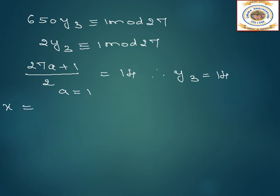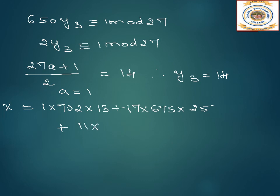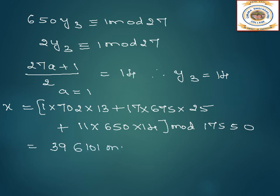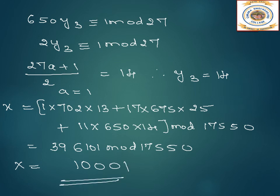Now we substitute: x equals a1 into M1 into y1 plus a2 into M2 into y2 plus a3 into M3 into y3. That is 1 into 702 into 13 plus 17 into 675 into 25 plus 11 into 650 into 14, all mod 17550. So x equals 17. If you substitute this as x, you should get the remainders as 1, 17, and 11. This is all about Chinese remainder theorem. Thank you.